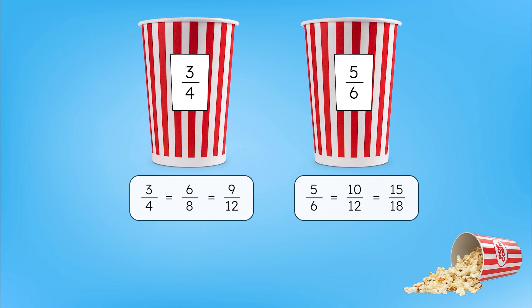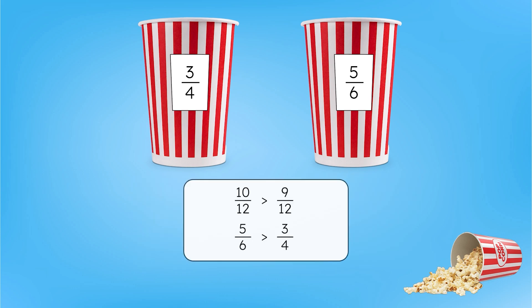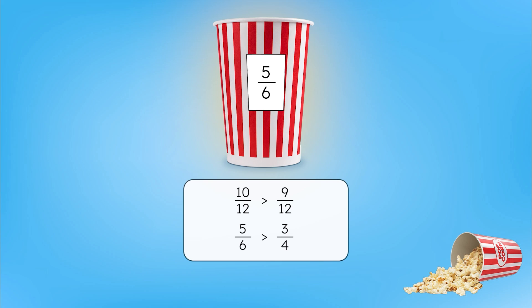Do any of these fractions share the same denominator? They both have a denominator of twelve — ten-twelfths and nine-twelfths. Since ten-twelfths is equivalent to five-sixths, and nine-twelfths is equivalent to three-fourths, we've found a common denominator, or a shared multiple, between these two fractions. And that means we've made them even easier to compare. Ten-twelfths is greater than nine-twelfths, which means five-sixths is greater than three-fourths. I'd like the bucket that's five-sixths full, please.